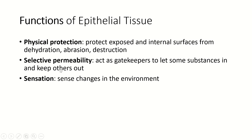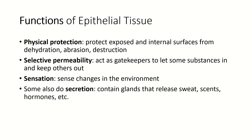Epithelial tissues have tons of sensation — lots of innervation and nerve endings — so they're very good at sensing changes in the environment, whether that's the environment outside the body, inside the digestive tract, or changes around an organ inside the body. Some epithelial tissues also perform secretions, and later in this chapter we're going to talk about glands and the different ways that glands secrete products to other parts of the body.